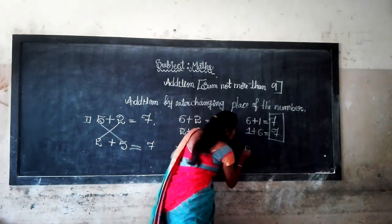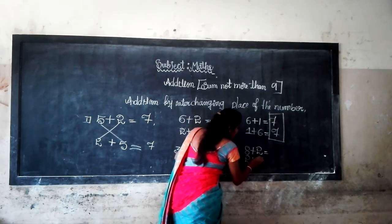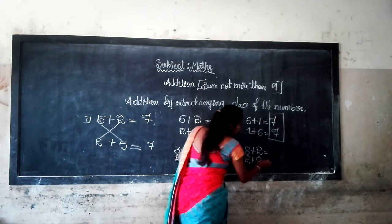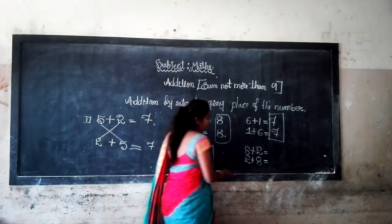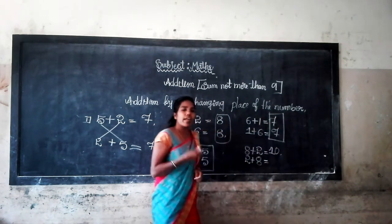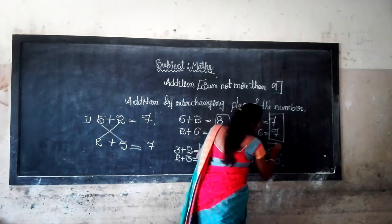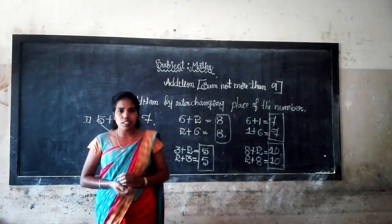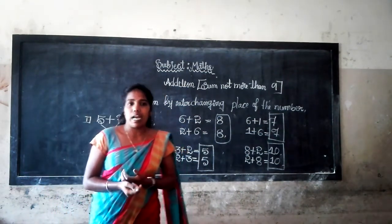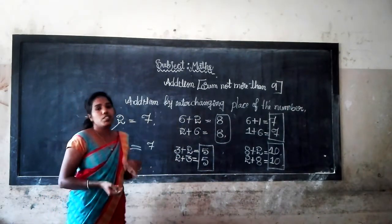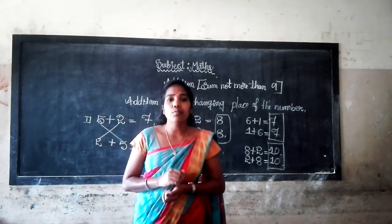Then 8 plus 2 and the interchanging place of the number is 2 plus 8. What is the sum? 8 after number 9, after number 9 is 10. So 8 plus 2 is 10. And 2 plus 8 is equal to 10. The answer will be same. Okay dear students, now you know the concept of addition with sums not more than 9, and addition by interchanging place of the number. In the next class, we will learn what is addition with zero.